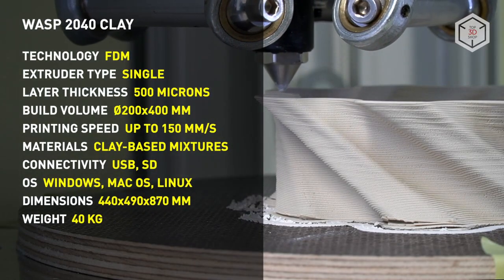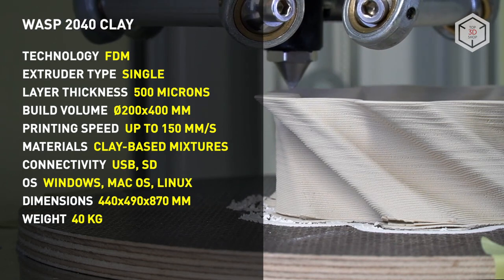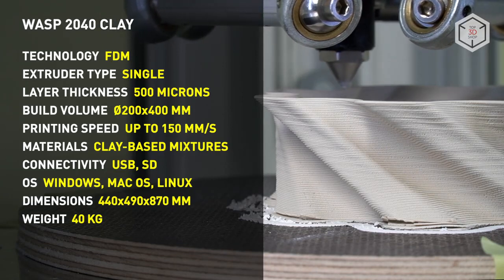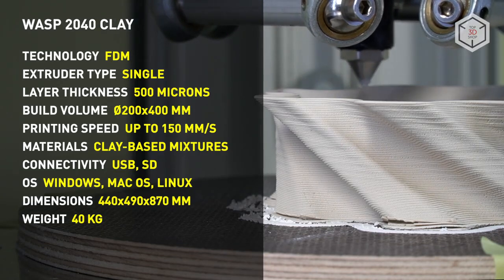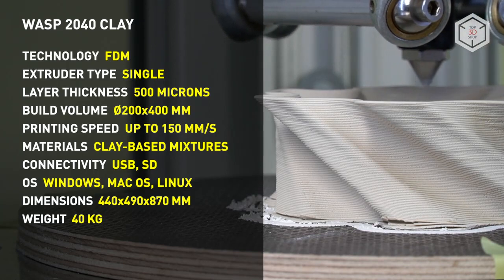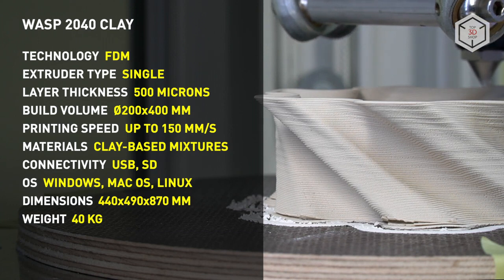The range of available materials for the WASP 2040 Clay includes three types of clay-based mixtures: white, red, and Limoges porcelain. Besides the printer, the package contains a three-liter container, a set of Teflon tubes and mounts, a pressure control, and 10 kilograms of the Limoges porcelain mixture.